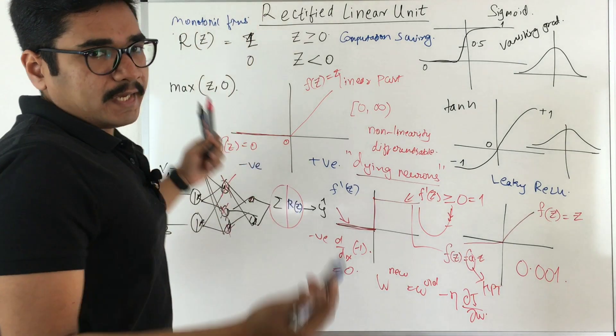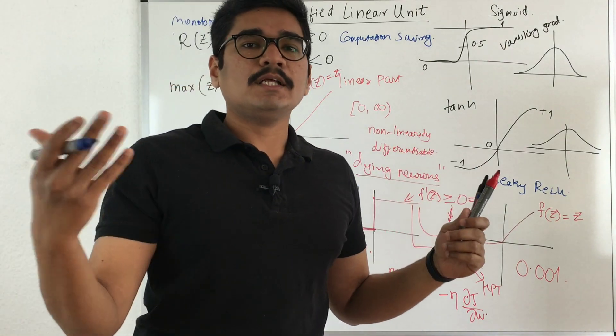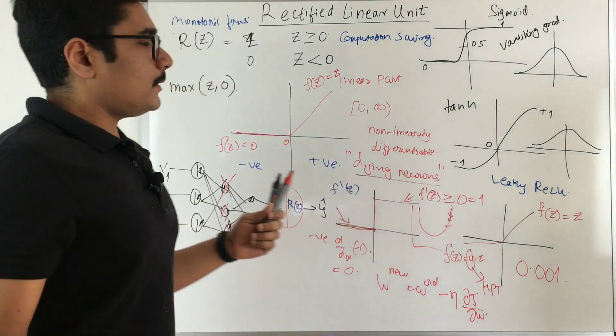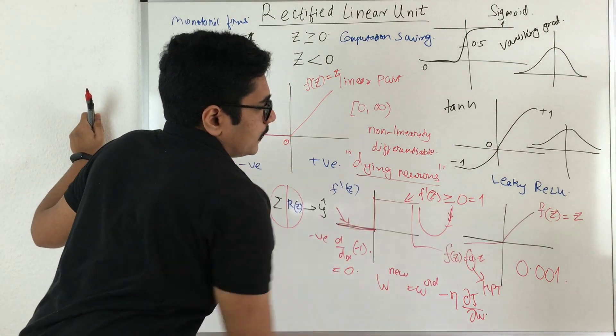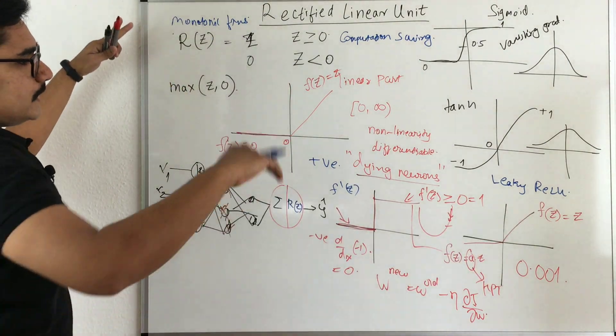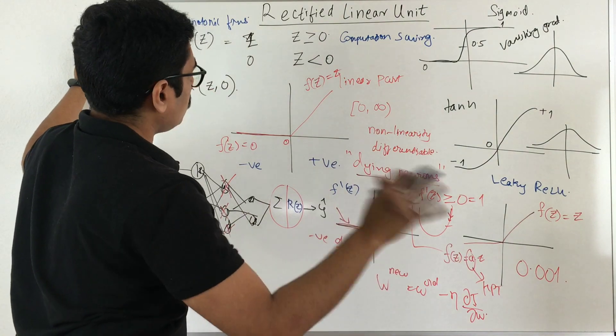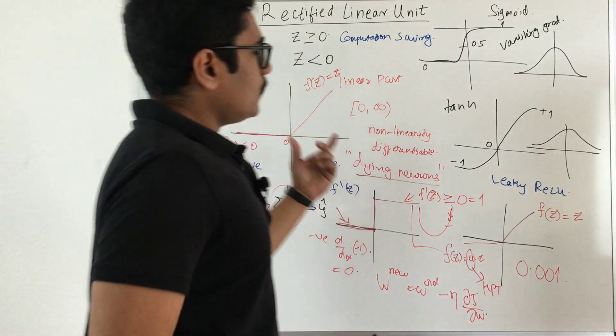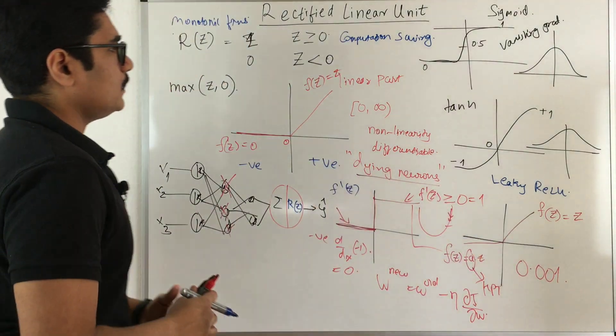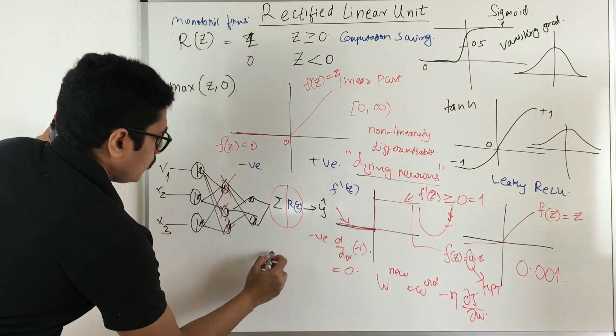Monotonic means it is either increasing or it is either non-decreasing in one particular direction. So you can see that it is increasing in one particular direction. So both of its derivative and its original function, both are monotonic in nature.